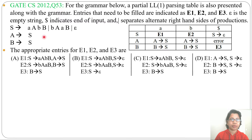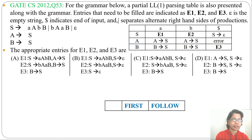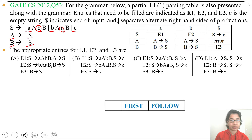This question is asking about E1, E2, and E3. So let's first find FIRST and FOLLOW. FIRST of S will be A, B, and epsilon. FOLLOW of S will be the same as FOLLOW of A and FOLLOW of B — which gives us A, B, and dollar, since S is the start symbol.